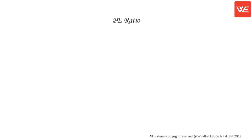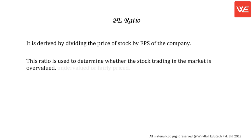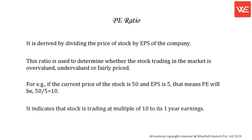PE Ratio. It is derived by dividing the price of the stock by the EPS of the company. This ratio is used to determine whether the stock trading in the market is overvalued, undervalued, or fairly priced. For example, if the current price of the stock is 50 and EPS is 5, the PE will be 50 divided by 5, equals 10, indicating that the stock is trading at a multiple of 10 to its one-year earnings.